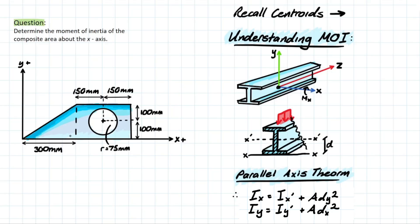If we take a look at our composite, we would have multiple local axes — for the triangle, for the rectangle, and for the circle. Generally, in our coordinate systems, the x- and y-axes will not lie on these local axes, especially in the case of composite shapes. This creates a distance d from our local axis to the global predetermined axis. Therefore, we're left with two separate formulas for determining global moment of inertia and local moment of inertia, and these formulas comprise the parallel axis theorem, which we'll use to solve this composite problem.